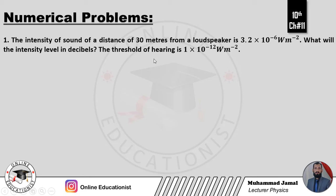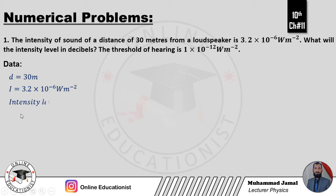I naught ki value hai — jho minimum intensity of sound hum sun sakti hai, woh 1 into 10 power minus 12 watt per square meter hai. Data note karte hain: distance d equal 30 meter, intensity of sound I equal 3.2 into 10 power minus 6 watt per square meter, aur I naught ki value 1 into 10 power minus 12 given hai.